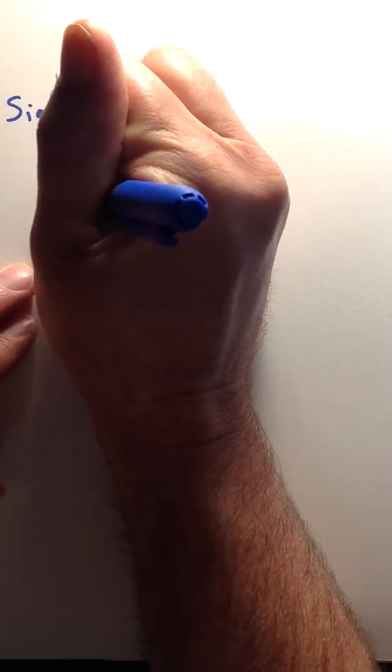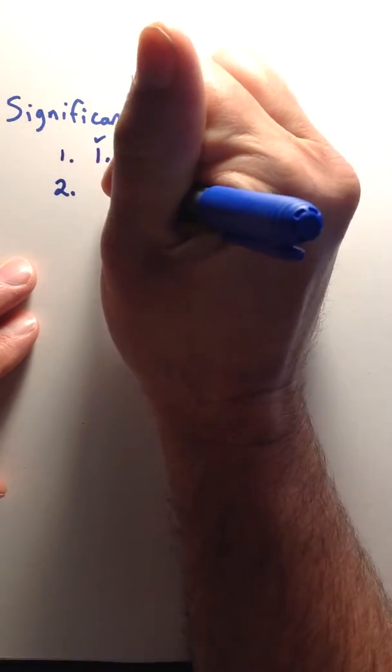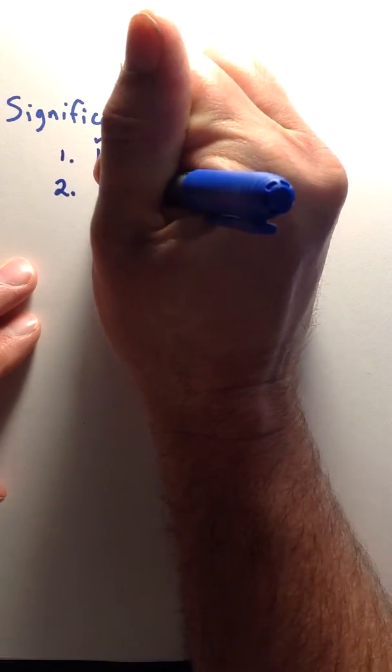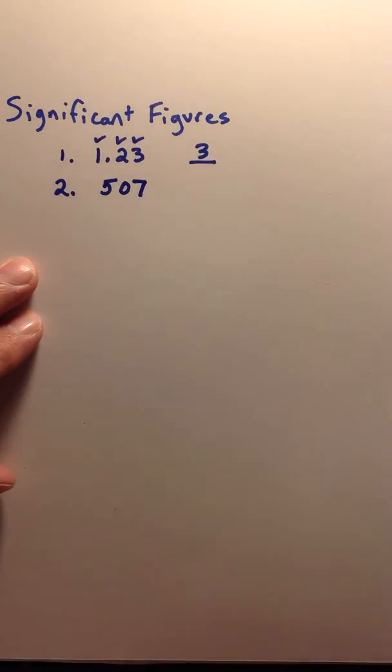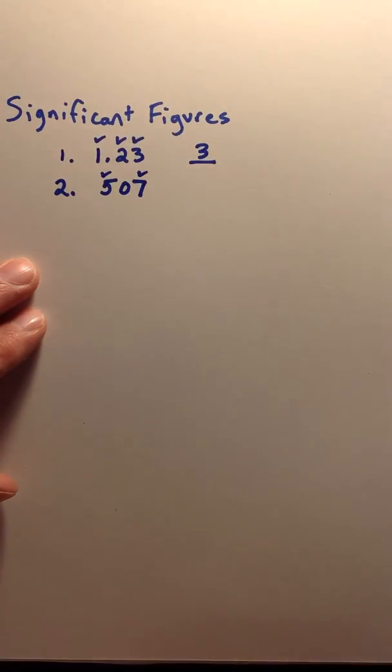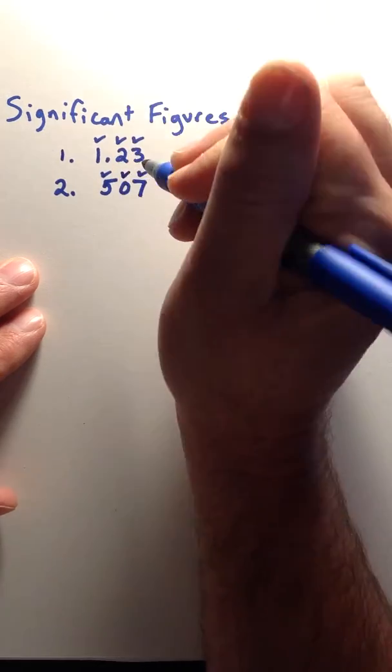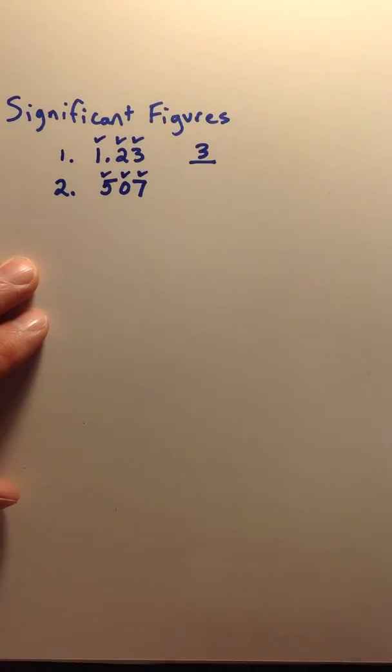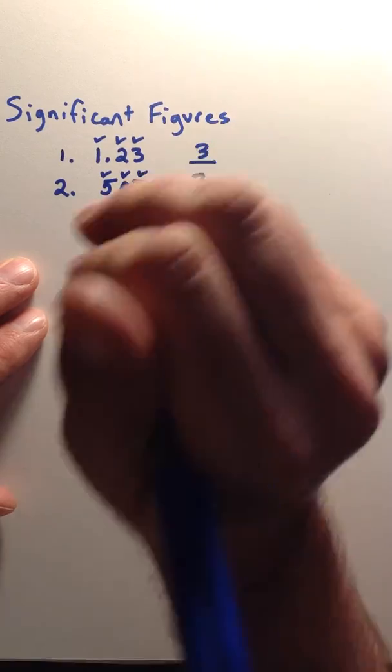The second type of number we're going to look at is something called a sandwich zero. If you have a number like 507, the first type told us that the non-zero numbers are significant. But in this case, you have a zero in between two non-zero numbers. That makes it also three significant figures.